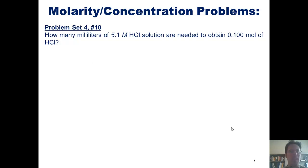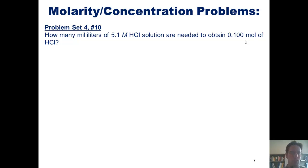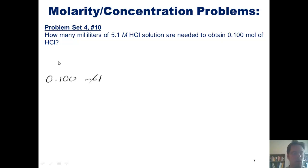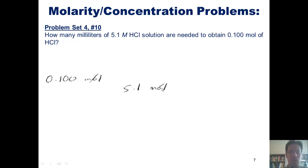Let's do our second problem: How many milliliters of 5.1 molar HCl solution are needed to obtain 0.1 moles of HCl? I start with the value I've been given that doesn't have denominator units, which is 0.100 moles. I also want to keep in mind where I'm trying to go — the final answer had better be milliliters. I'm going to place a set of parentheses immediately to the right of this value, and I want to put moles in the denominator.